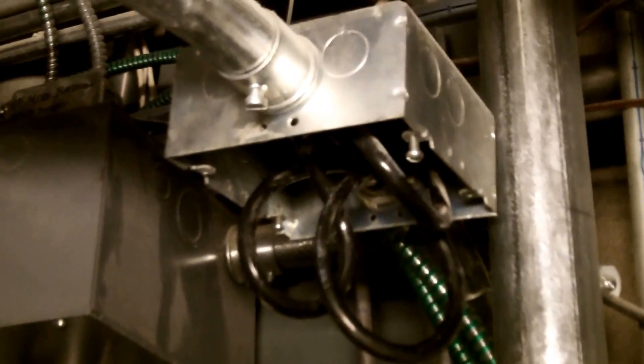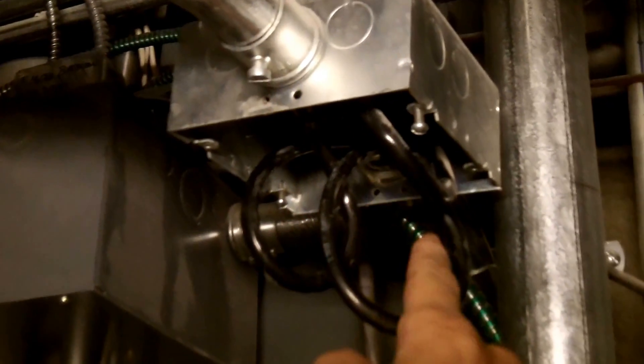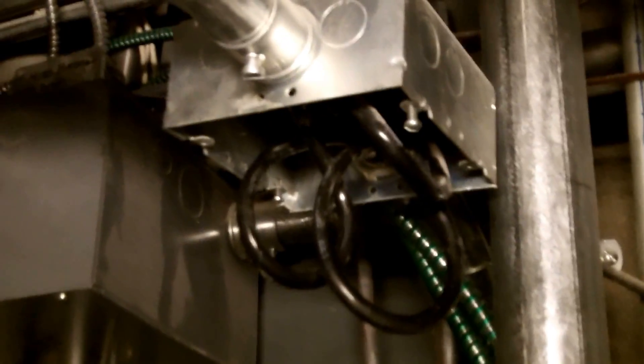When you have a straight pull like this, where the pipe comes in this side of the box and out the other side, and wires number 4 and larger,